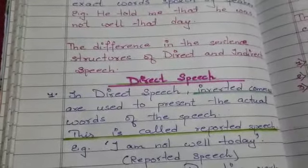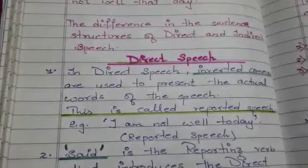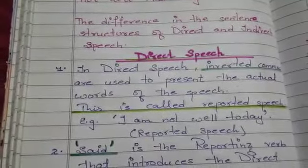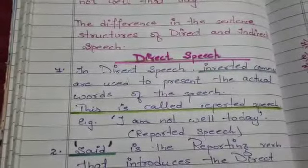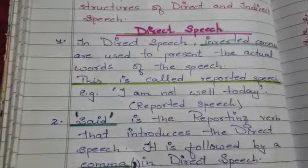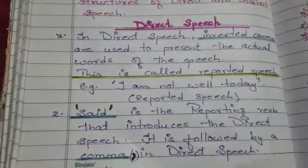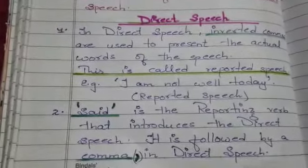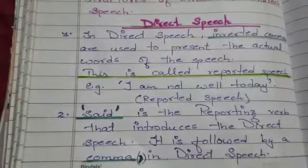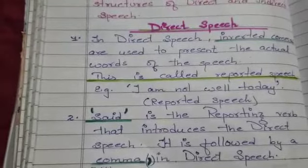जैसे आपने पहला example देखा था — He said to me, 'I am not well today.' यह example था आपके book में। तो अब आप समझें, reported speech किसे कहते हैं? जो open and close inverted commas के अंदर लिखा हुआ sentence है, उसे ही हम reported speech कहते हैं। अब reporting verb किसे कहते हैं? 'Said' word जो है, वो reporting speech से पहले introduce करता है, उसे हम reporting verb कहते हैं। Said is the reporting verb that introduces the direct speech. It is followed by a comma in direct speech. He said to me — said क्या था आपका? Reporting verb। And 'I am not well today' — this is your reported speech.